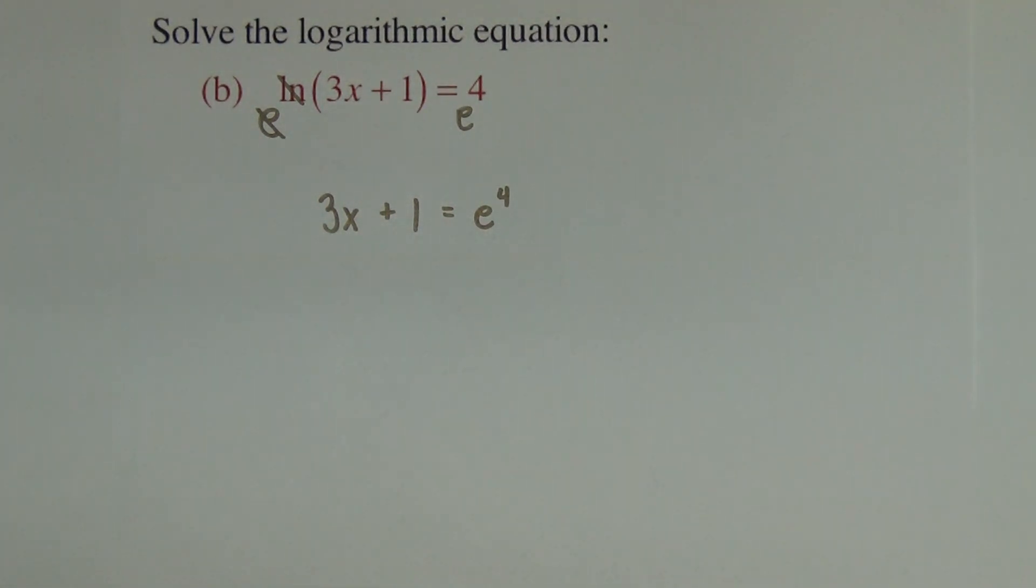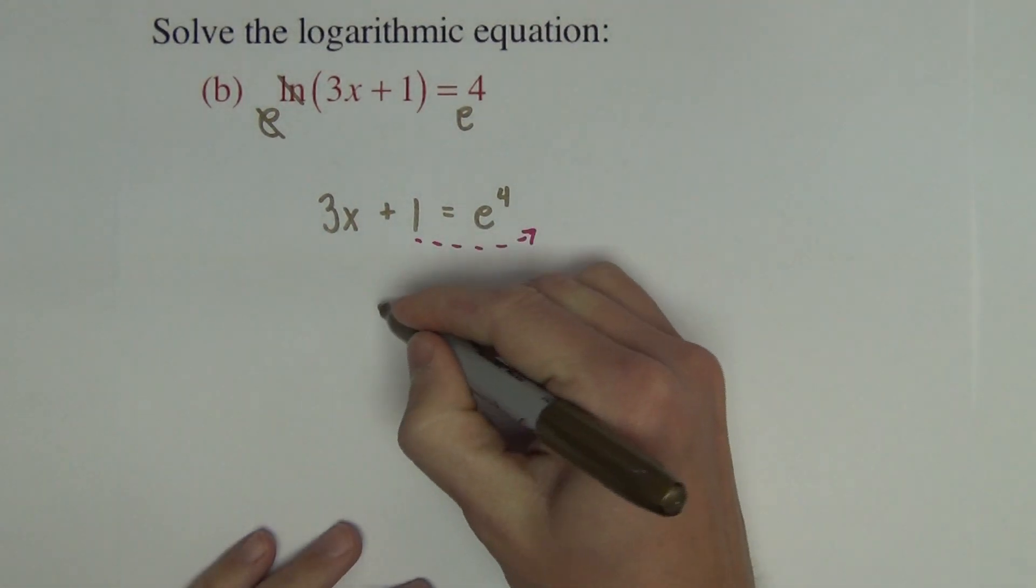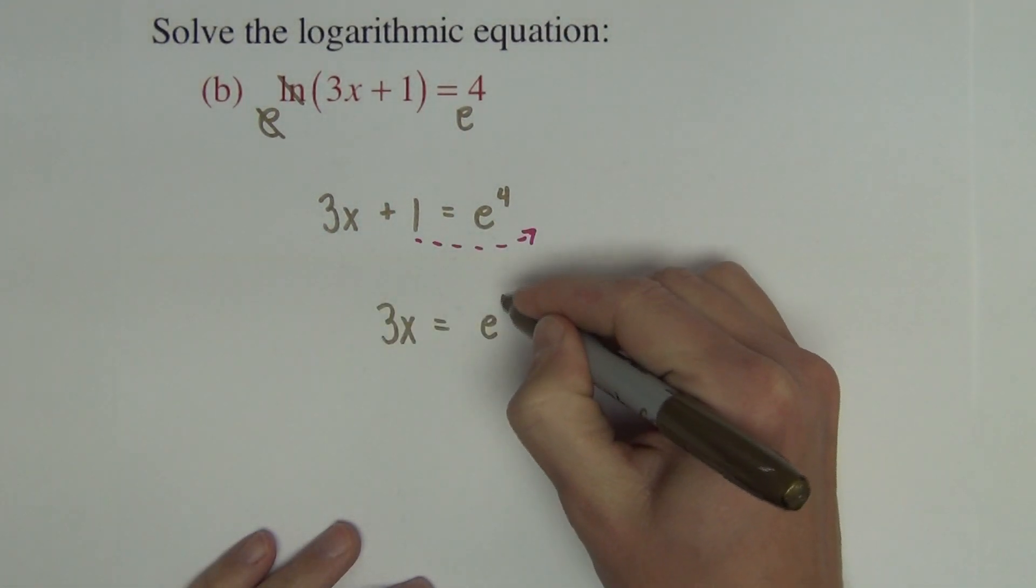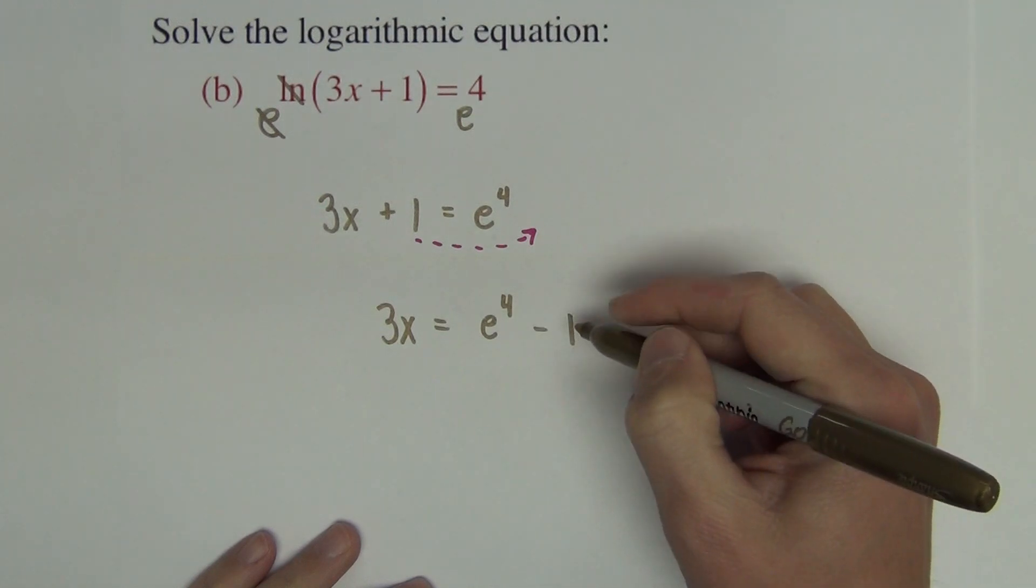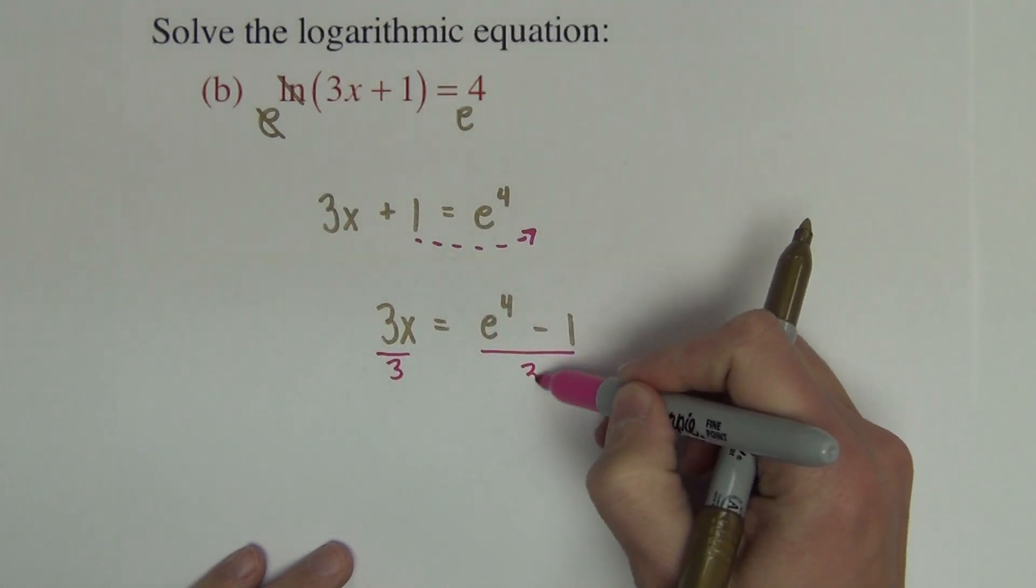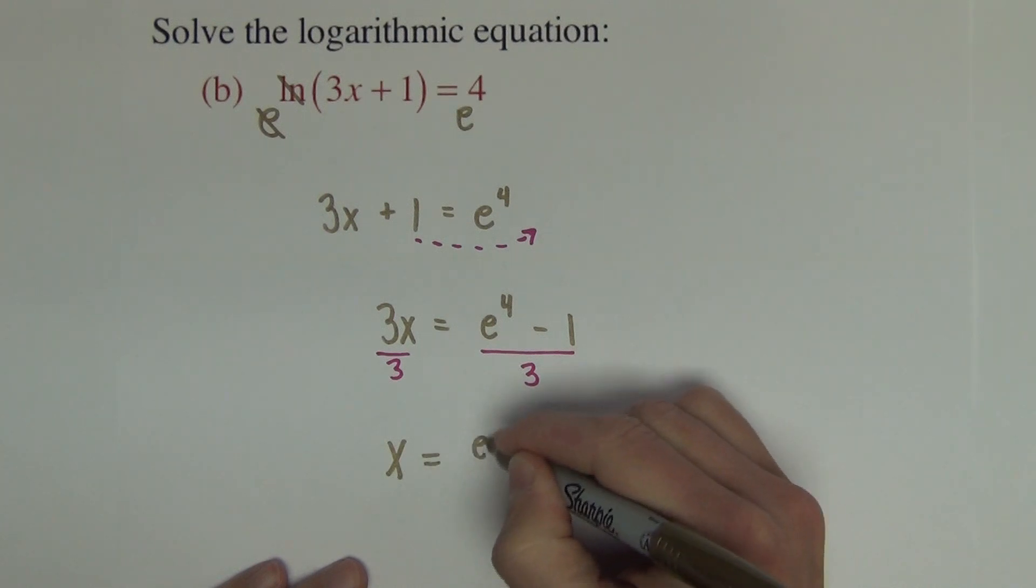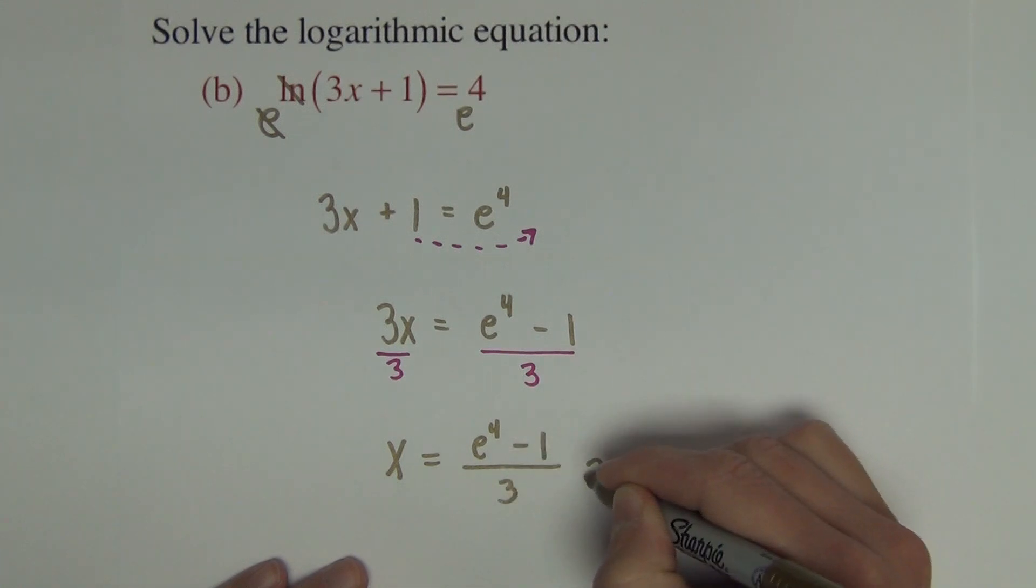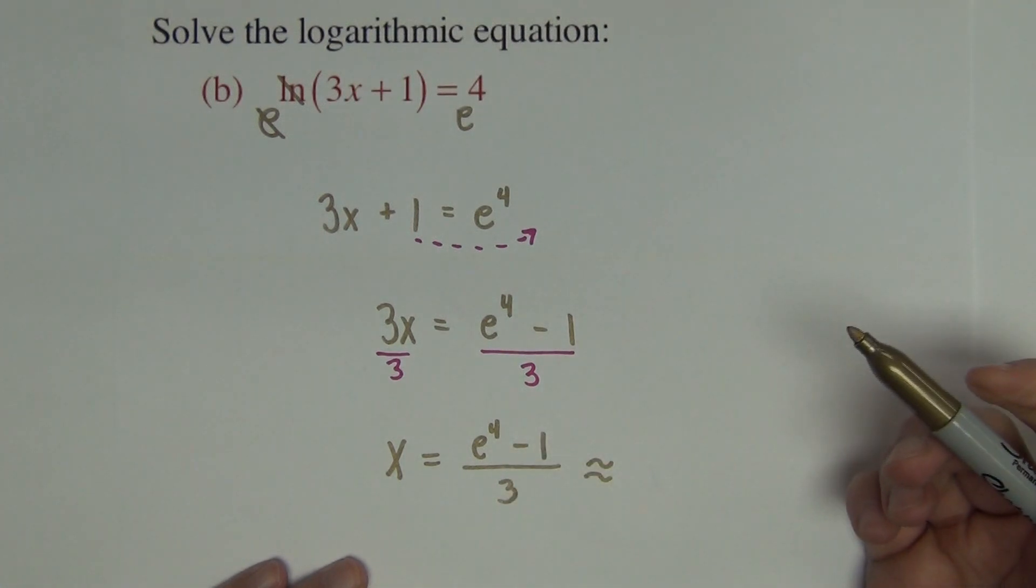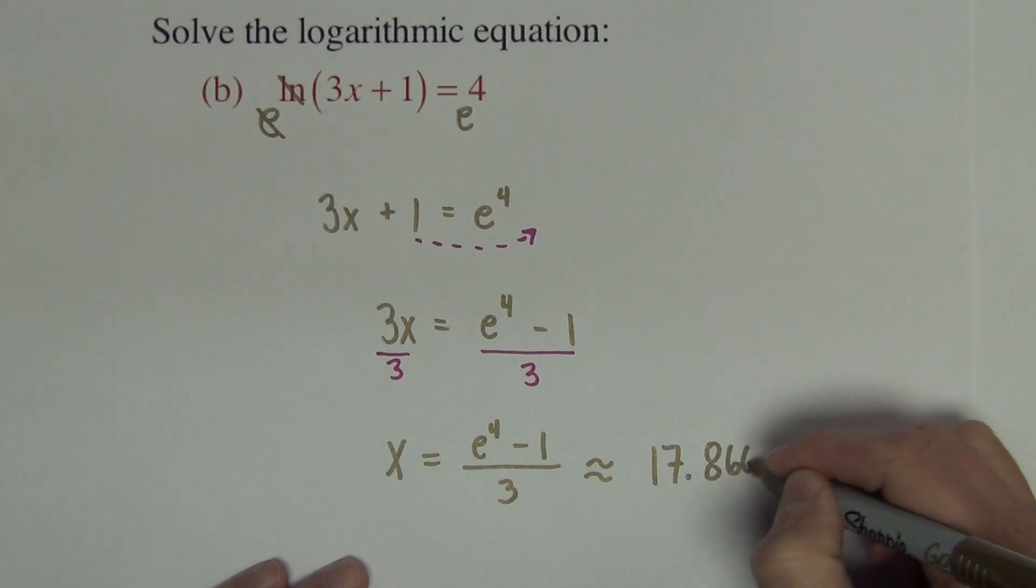We are going to take that plus 1 and move it over. So we get 3x equals e raised to the 4th power minus 1. And then we're going to take the 3 and divide it. So we get x equals e to the 4th power minus 1 over 3. And we are going to go ahead and approximate this to 4 decimal places. It is 17.8661.